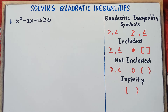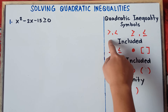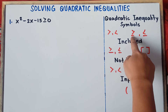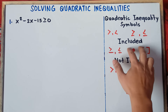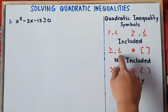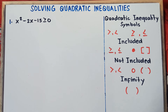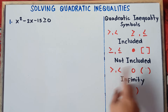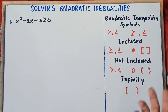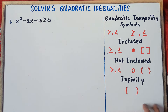Before solving quadratic inequalities, you need to master how to make solution sets. I will put the link in the description down below. So these are the quadratic inequality symbols. We have greater than, less than, greater than or equal, and less than or equal. For included values — greater than or equal and less than or equal — we use a closed circle and brackets. For not included — greater than and less than — we use an open circle and parentheses. For infinity, always use parentheses.